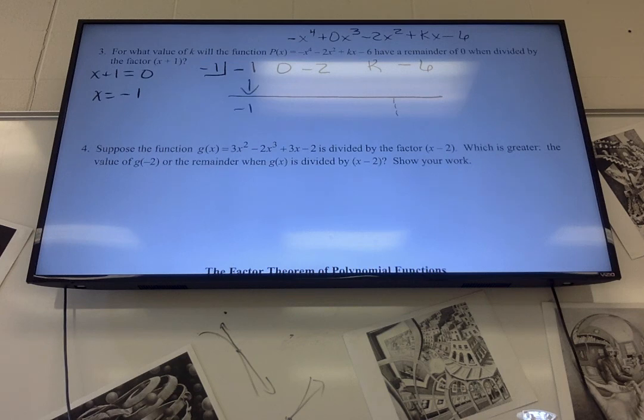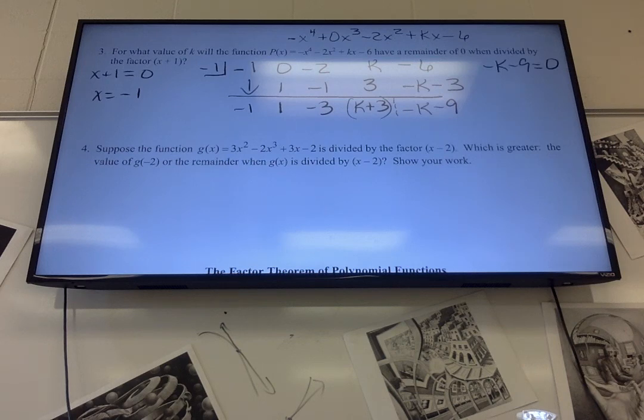First number comes straight down. Multiply the number in the box times the number in the line. That's 1. Then add. Number in the box times the number of the lines. Negative 1. Then add. Number in the box times the number of the line. That's 3. Then add. That's k plus 3. Number in the box times the number of the lines. That's negative k minus 3. I can put the negative 6 and the negative 3 together, so it's negative k minus 9, and I want it to equal 0, so I add 9, and divide by negative 1, and k is negative 9.